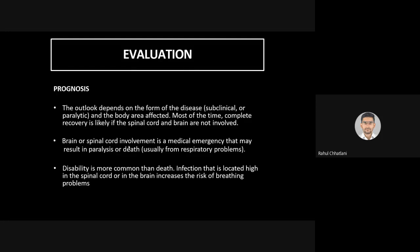Prognosis: the outlook depends on the form of the disease and the body area affected. If the virus remains in the GIT and pharynx without reaching the spinal cord or brain, complete recovery is likely. However, if the spinal cord or brain is involved, it becomes a medical emergency requiring hospitalization, and death is possible due to respiratory complications. Disability is more common than death — since inflammation damages motor neurons irreversibly, there is permanent loss of function.